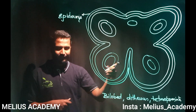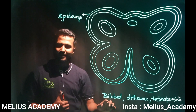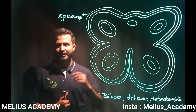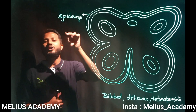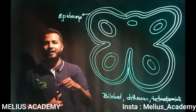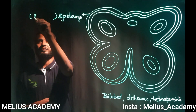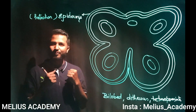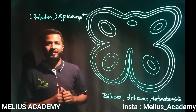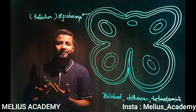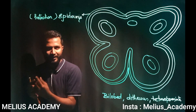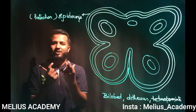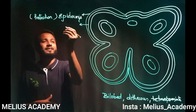Moving ahead, the first statement you write is: a typical anther is bilobed, dithecous, and tetrasporangiate. The cross-section shows the following structures. The outermost wall layer is epidermis — write it as a side heading, then write that this layer is meant for protection as it is the outermost wall layer, protecting inner tissues. The cells are rectangular or barrel-shaped in nature.